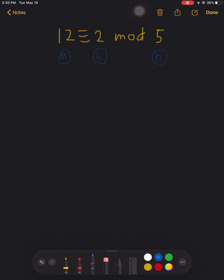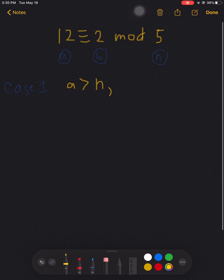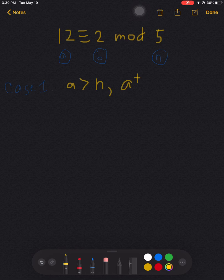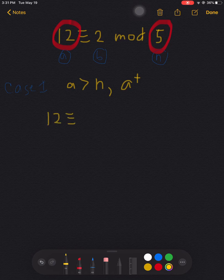Now our first case would be in the event that A is greater than N and that our A is positive. So what we'll be considering here would be A, or the leftmost number, would be greater than the rightmost number, which is this number right here, and considering of course that this one is positive.